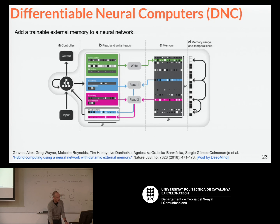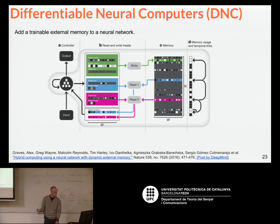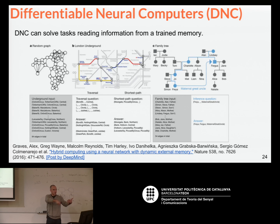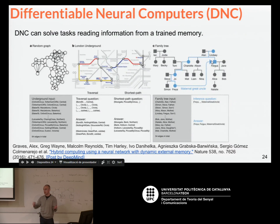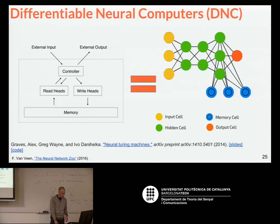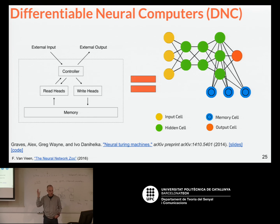The idea is you have a memory network module that can be trained, and they use these neurocomputers to solve tasks like answering questions — for example, how can I get from one metro station to another, you look at the map and answer. They also used a family tree to answer relationship questions like who is someone's aunt. So we are really dealing with knowledge that is learned, stored, and doesn't vanish — you can read or write it. You may have also read about the predecessor model called neural Turing machines.